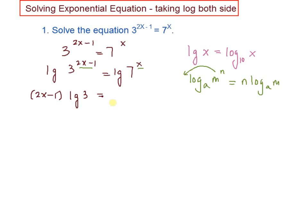Next, you have to expand. So you have 2x log 3 minus log 3 equal to x log 7.